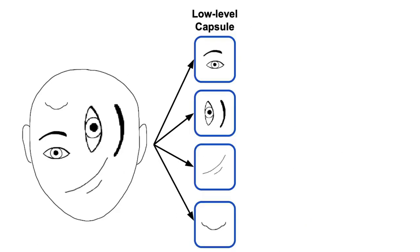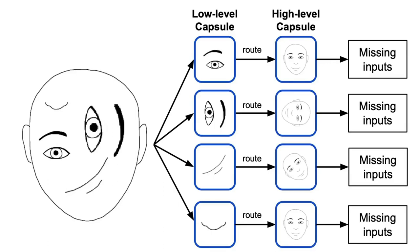On the other hand, if we fed the same image to a capsule network, it will most likely not make the same mistake, since, although the low-level capsules would detect each individual feature, after this information is routed to the corresponding higher-level capsules, the later will not fire since they will not get all the necessary inputs.